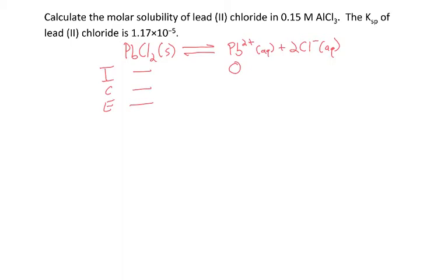If we consider the aluminum chloride, that's a soluble salt, so it will completely dissociate in water. When it does, it breaks up into one aluminum ion and three chloride ions.